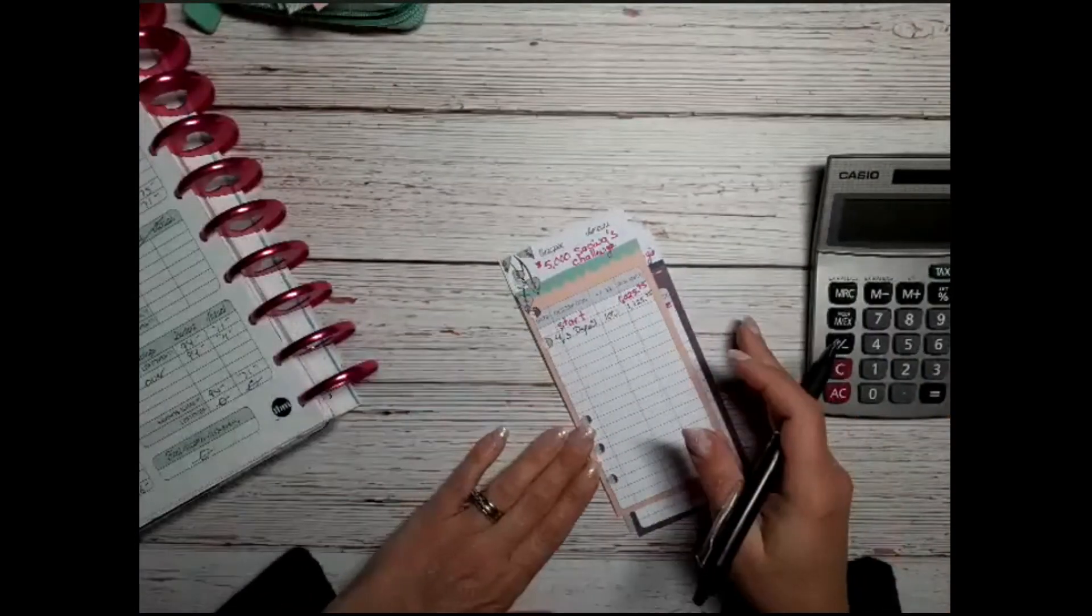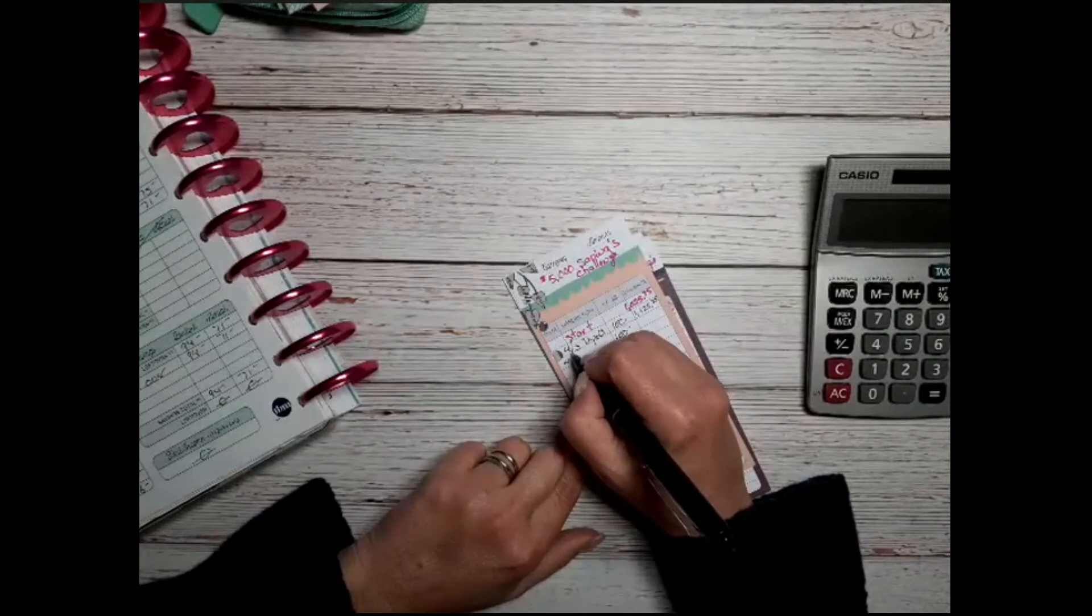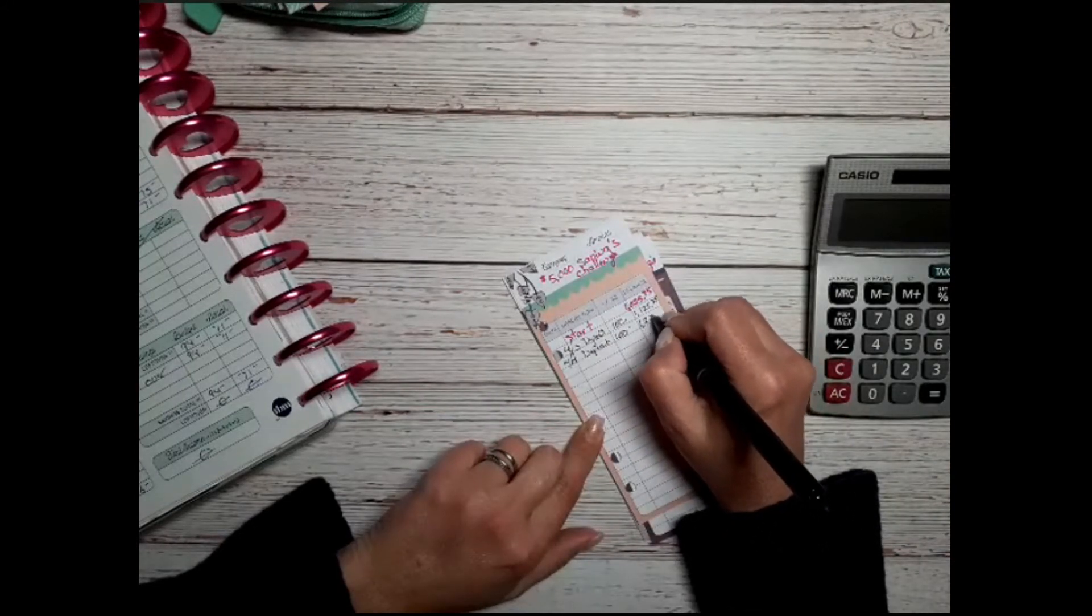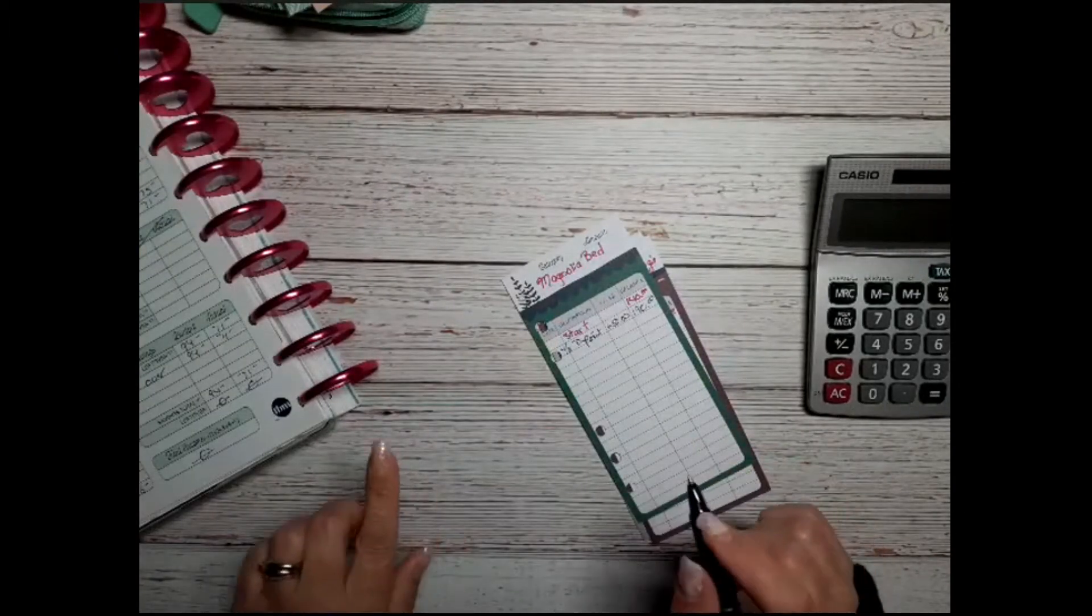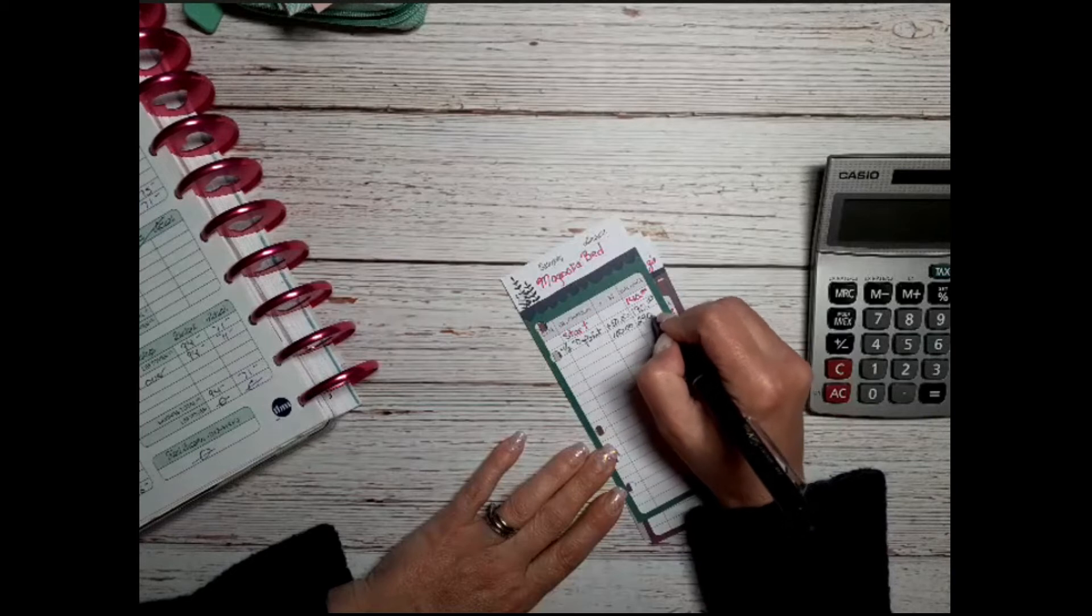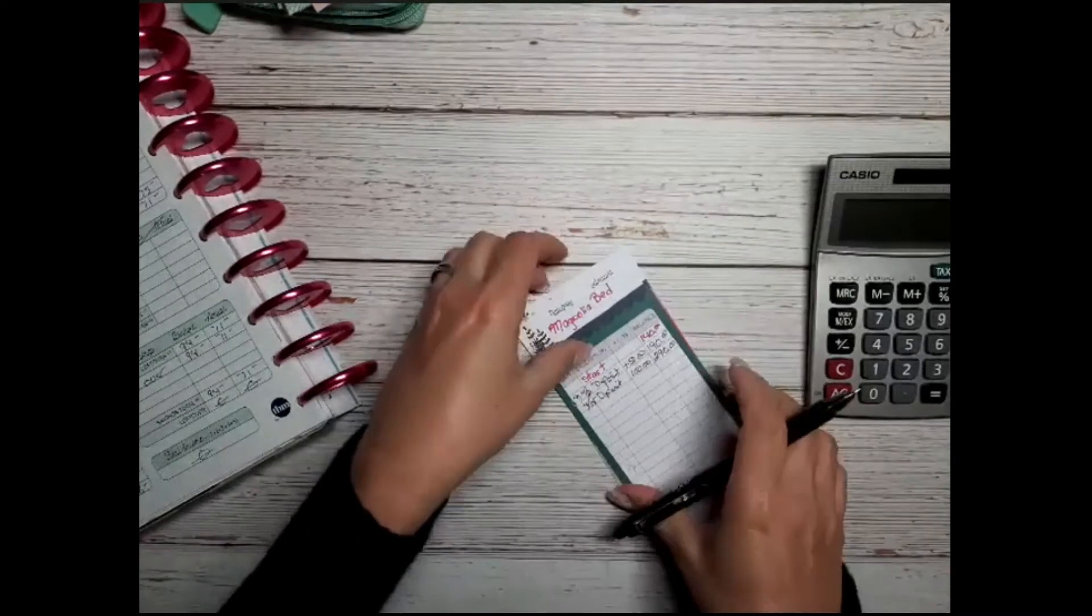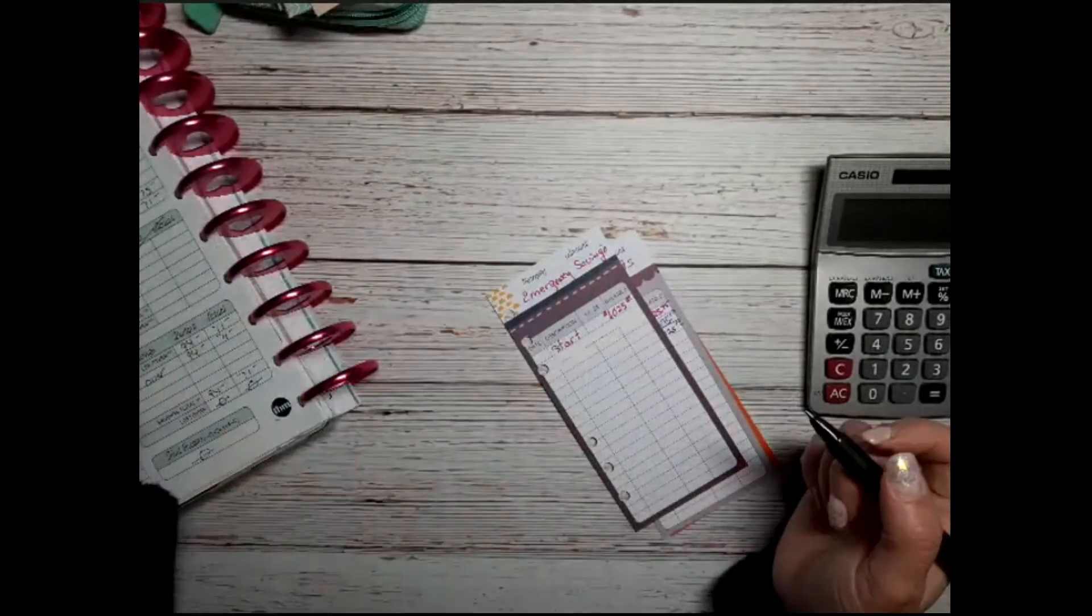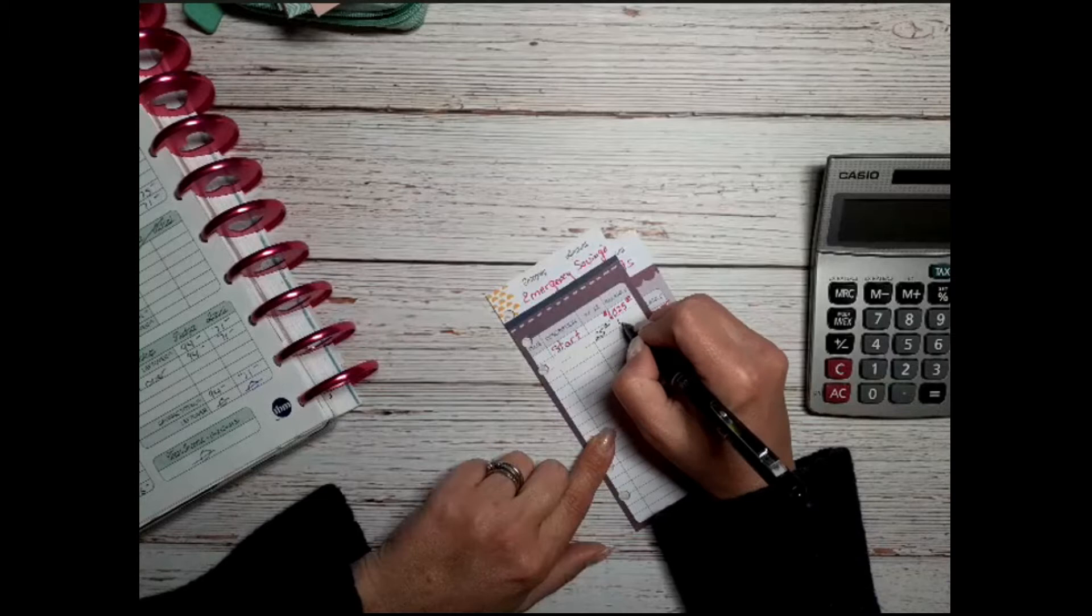My $5,000 challenge, we are adding $100. And these are separate savings accounts at my bank. My bank allows me to do separate savings accounts all under one account. So that's going to be $1,225.75 in the $5,000 savings challenge. Alright, Magnolia bed, we're going to be putting $100 into that account, so that's going to give us $290. Emergency savings, we are putting $25 in here, it's going to bring us to $1,050.